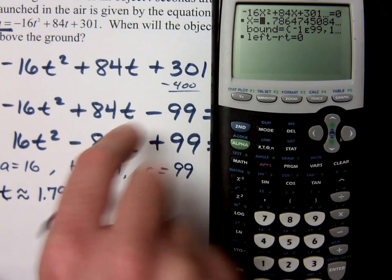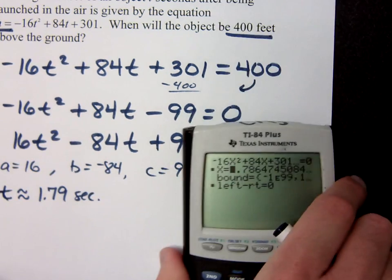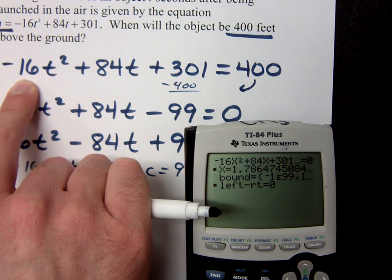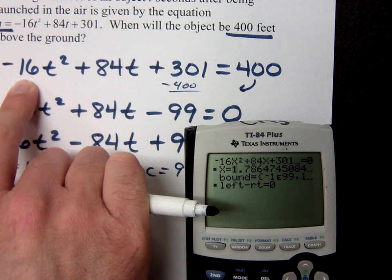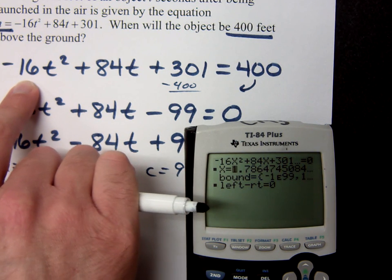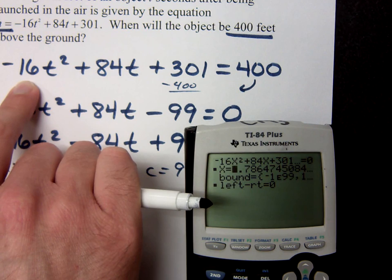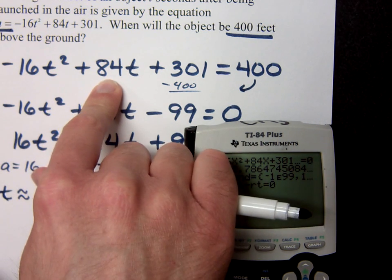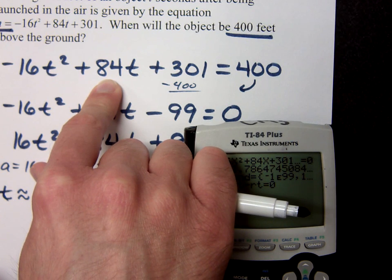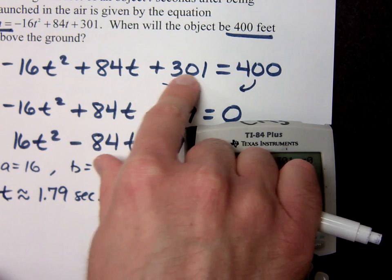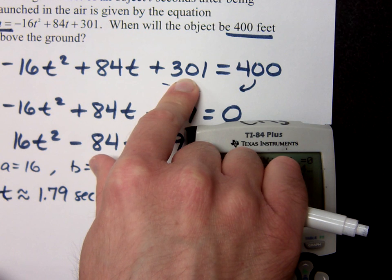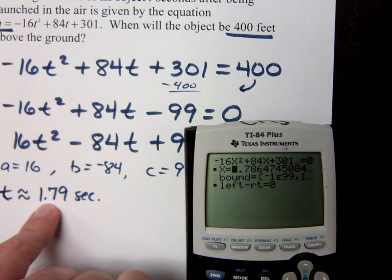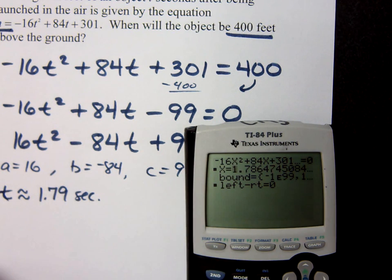Now, when we look at the equation that we have here, the original equation, this -16 deals with the force of gravity, the acceleration due to gravity, so -32 feet per second squared, but in the formula you have to divide that by 2. This 84 relates to the velocity, the initial velocity, which is 84 feet per second. And 301 means you had an initial height of 301 feet above the ground. So we're saying that in about 1.79 seconds, we've reached 400 feet.